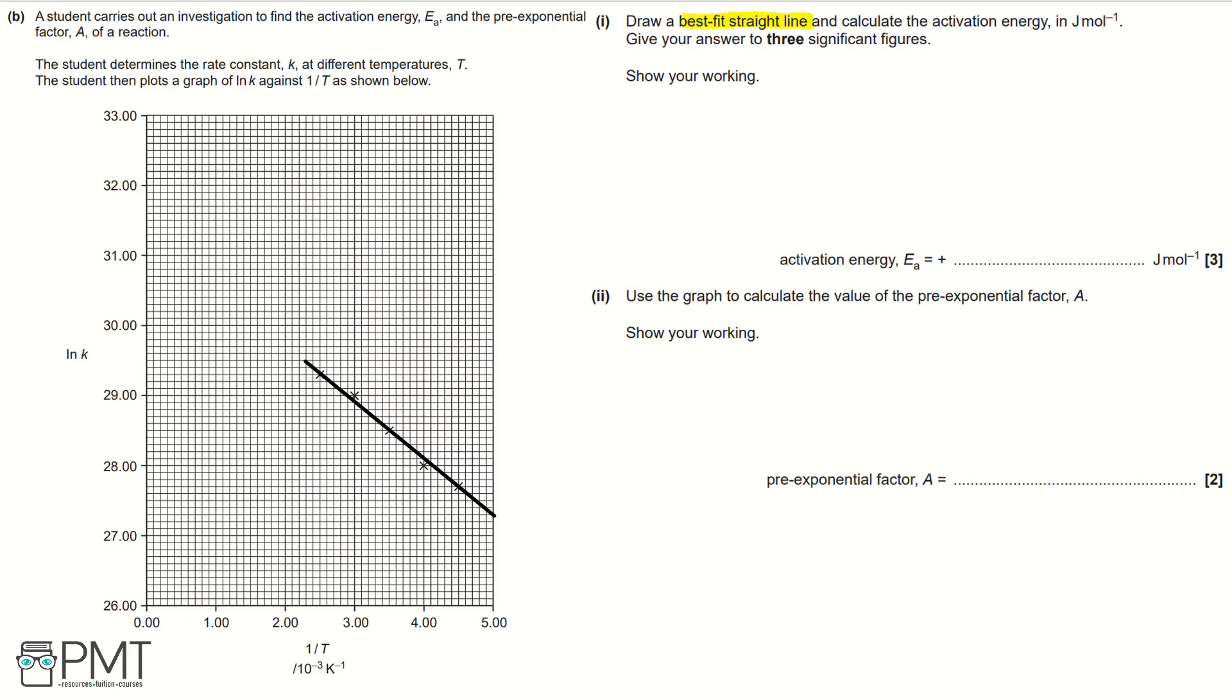Now we've drawn our best straight line, we need to calculate the activation energy. In order to do this, we need to find the gradient of the line. If we take two data points on the line, 29 and 28, and see where they fall on the x-axis, we have 2.90 and 4. But we need to pay careful attention to the units: 1 over T times 10 to the negative 3. So in working out the gradient, we need to do 29 minus 28 divided by 2.9 times 10 to the negative 3 minus 4 times 10 to the negative 3. That gives us a gradient value of minus 909.